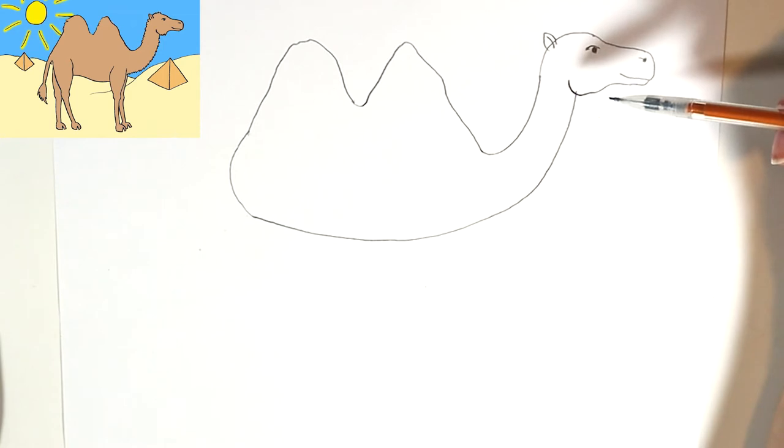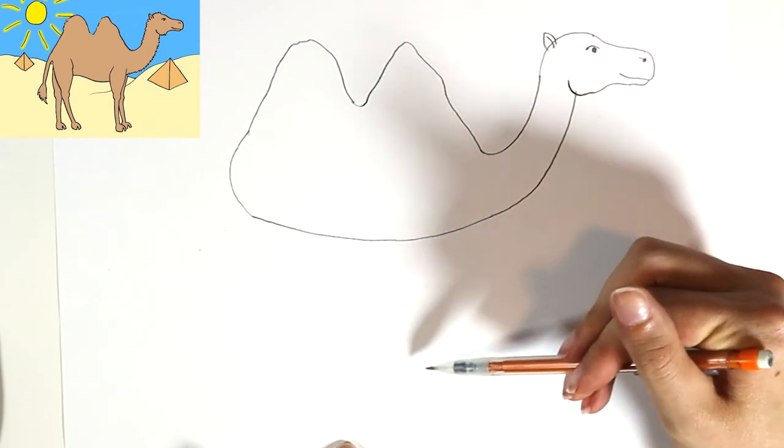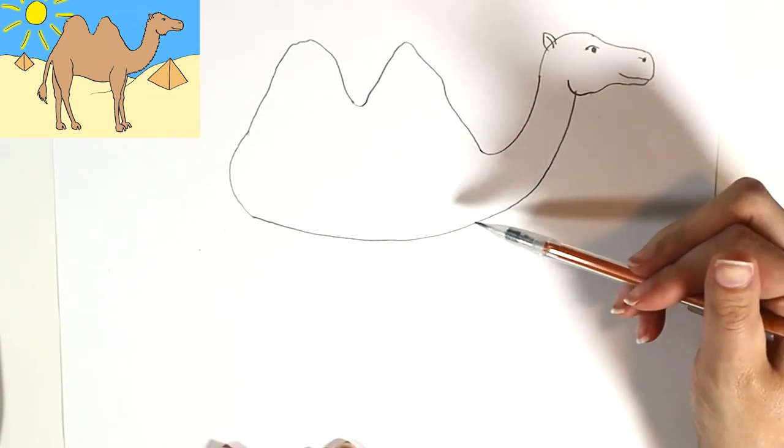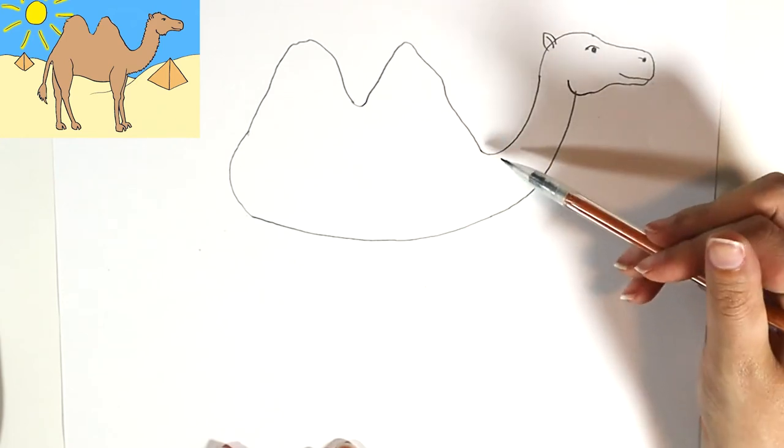We'll leave this how it is for now and now we're gonna work on adding our legs for our camel. If you struggle with the legs, it is okay to just do two straight lines and the hoof, but I'm gonna show you how to make them a little bit more realistic.